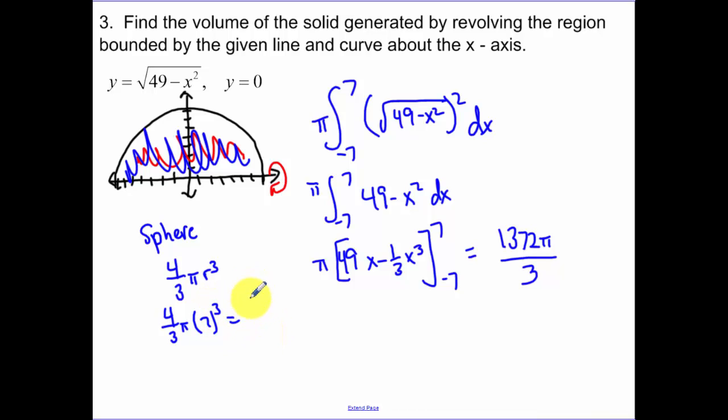So when I plug that in, and again, I cheated, used my calculator, 1372 pi over 3. So you get the same thing coincidentally, not really coincidentally, because your volume that's going to ensue is going to be a sphere.